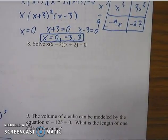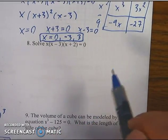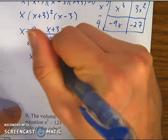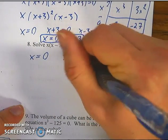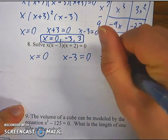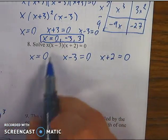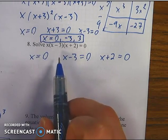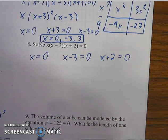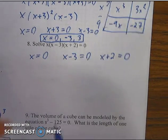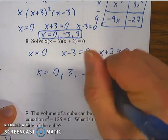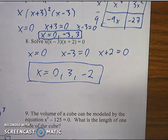Number 8 is probably the easiest question on this review because it's already factored, and it says solve. So you just need to take each of these factors and set them equal to 0. A lot of people would try to multiply this out to get some nasty-looking cubic and try to solve it from there — I don't recommend that. Just set each factor equal to 0 and be done with it. So x equals 0, positive 3, and negative 2. Easiest question on the review.